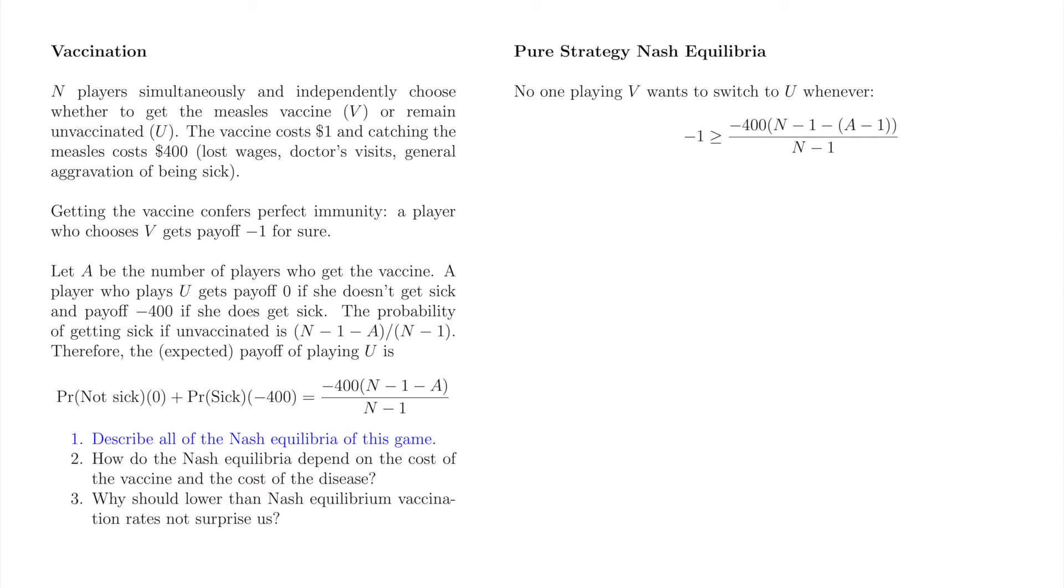Let's first make sure no one choosing V can profitably switch to U. A player choosing V receives minus 1. If she had instead chosen U, the number of vaccinated players falls from A to A-1, so the probability of getting sick if unvaccinated is now (N-1-(A-1))/(N-1). We multiply that fraction by minus 400 to obtain the expected payoff of our player choosing U instead of V. A player choosing V cannot profitably deviate to U when the inequality shown is true. Here are the first two algebraic steps. Be careful to remember to flip the direction of the inequality when dividing by minus 400. A is bounded above by N minus (N-1)/400. If N equals 2, that is to say A is bounded above by 401 out of 400, or a little more than 1.